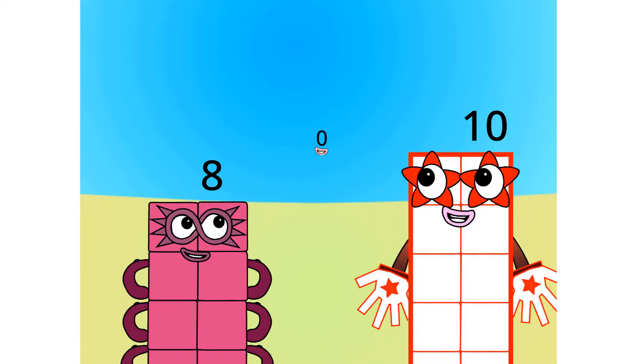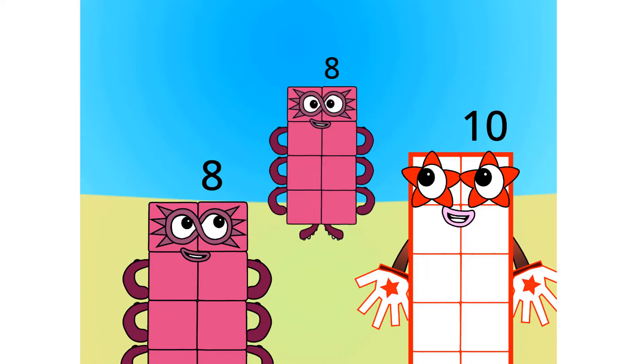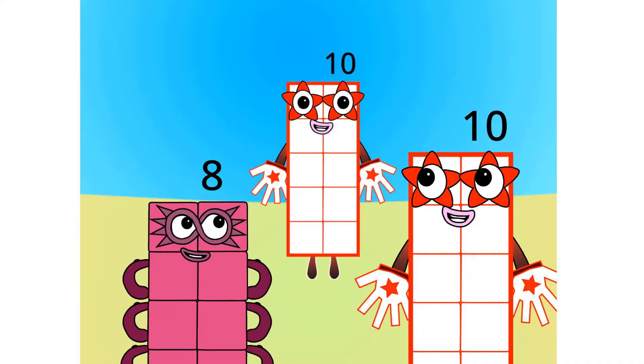8, do you know why we count up to 10? No. Well, the main reason why we count to 10 is because humans have 10 fingers, 5 on each of their 2 hands. 0, 1, 2, 3, 4, 5, 6, 7, 8, 9, 10. See, 10 numbers, 10 fingers!